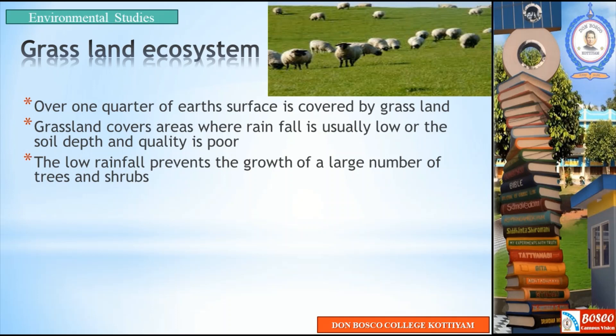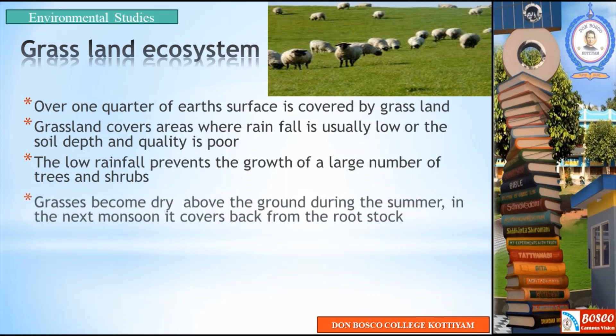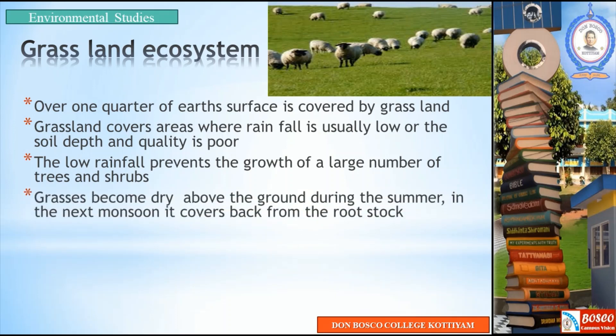In the summer season, grass covers back from the root stock. This is a characteristic of the grassland ecosystem — even after the dry summer season, it recovers and turns back into a grassland ecosystem.